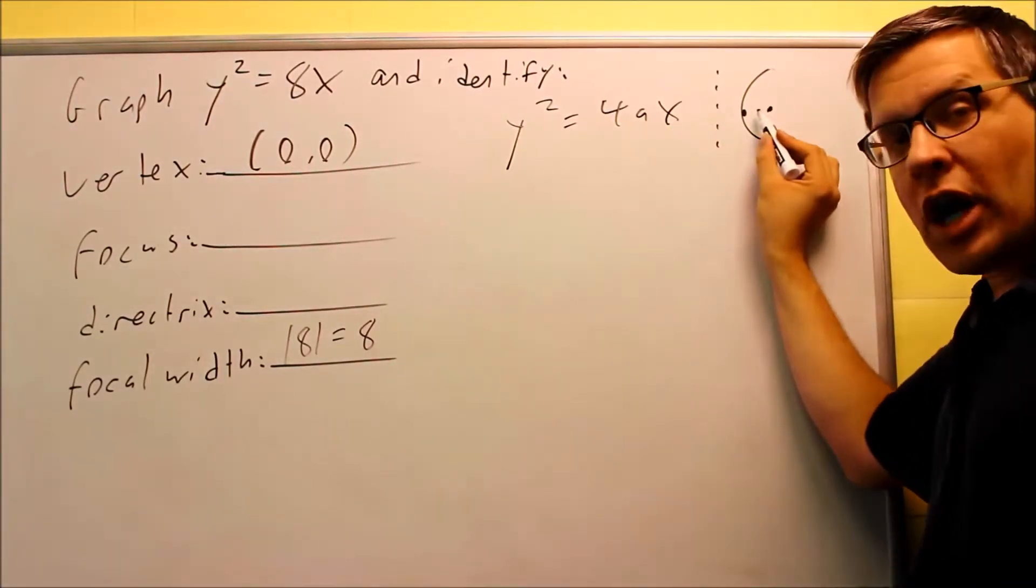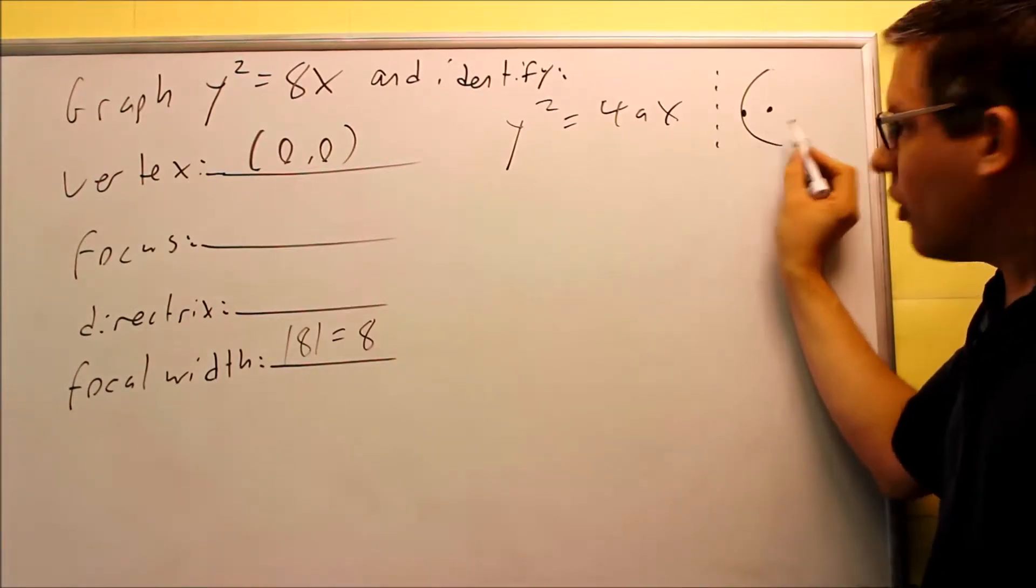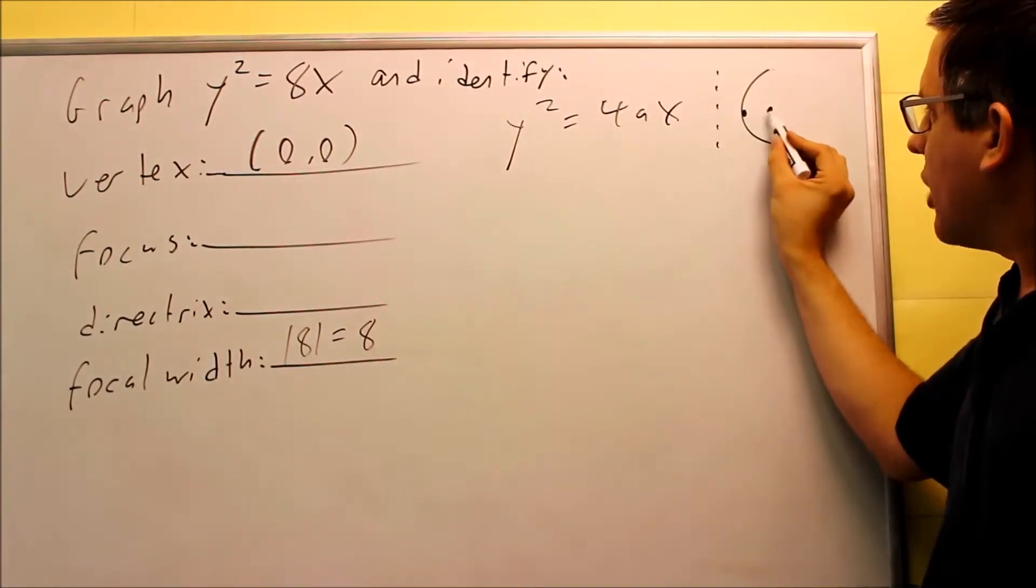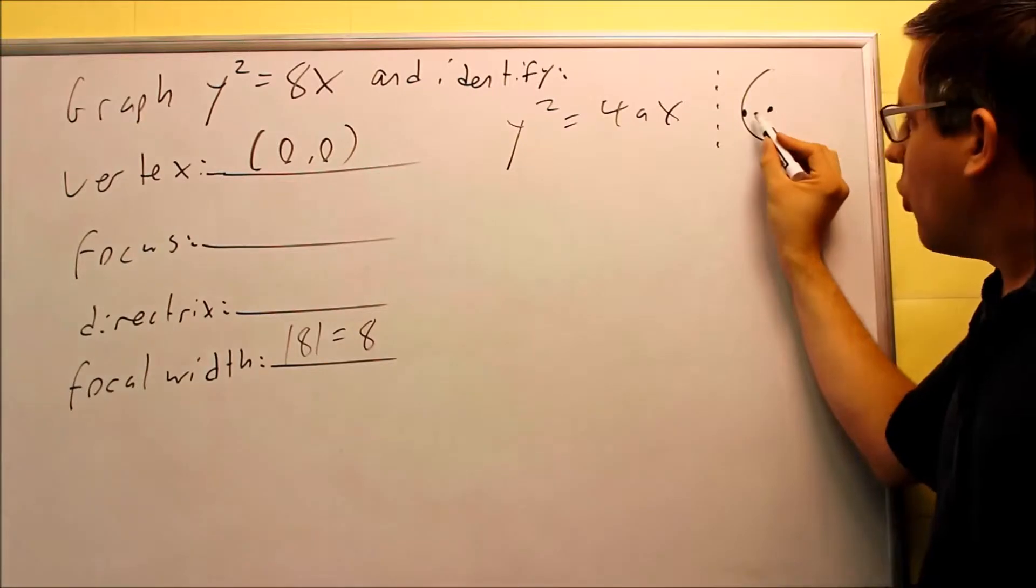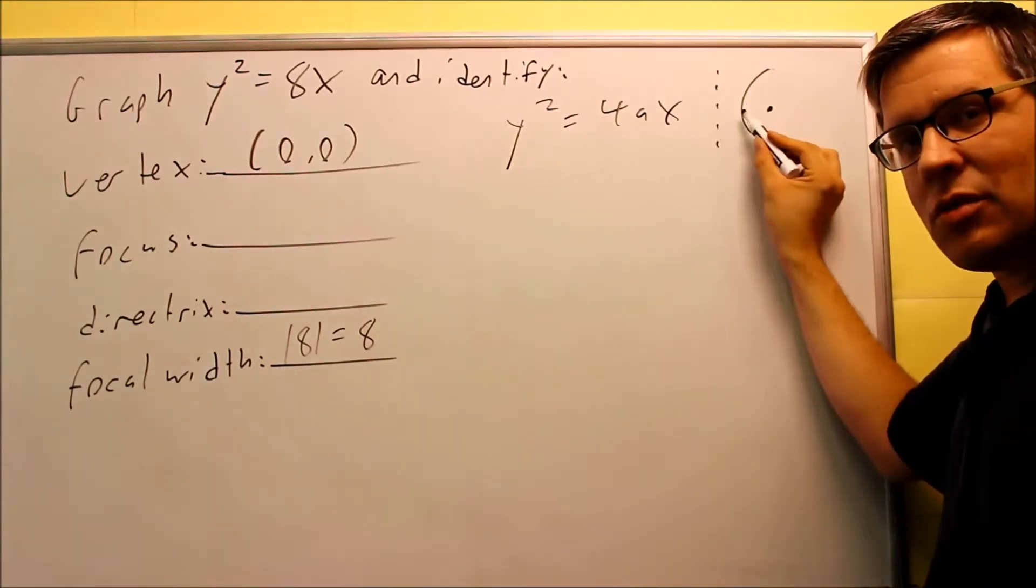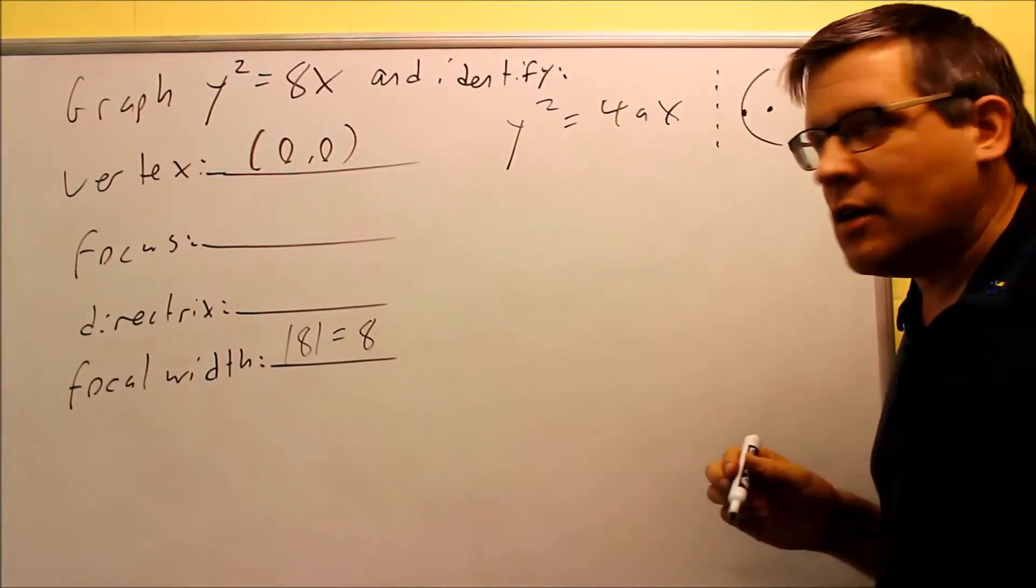The a is used for the graph here. So we know it goes to the right, however, the distance from your vertex to the focus, or from the vertex to the directrix, that's going to be our a value. So we have to figure out what the a is.